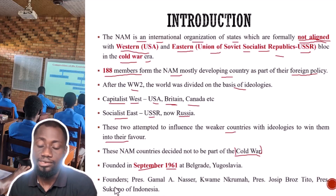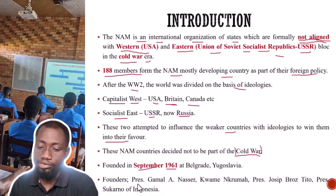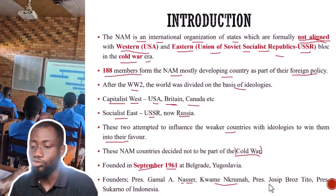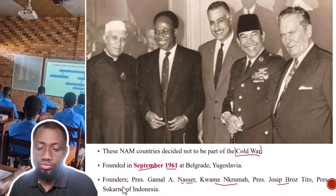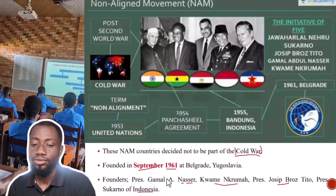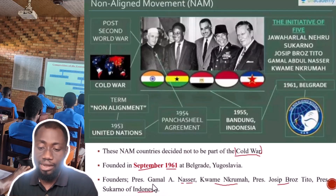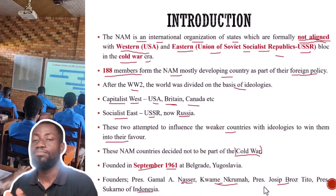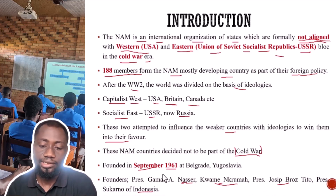Let's look at some of the founders — those who proposed that we should not join any of them but deal with them neutrally. President Gamal Abdel Nasser of Egypt was instrumental. Kwame Nkrumah of Ghana was also instrumental. President Joseph Broz Tito was also very instrumental. And then President Sukarno of Indonesia was also very instrumental. I believe I will be showing pictures of these people. These people were instrumental in the NAM.